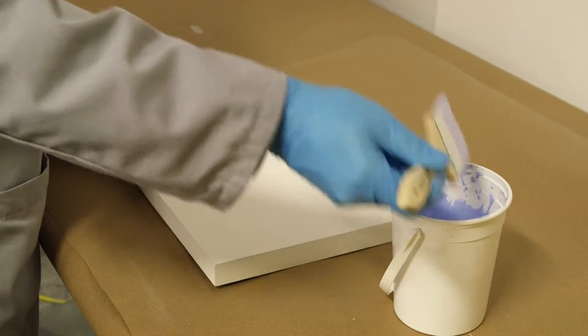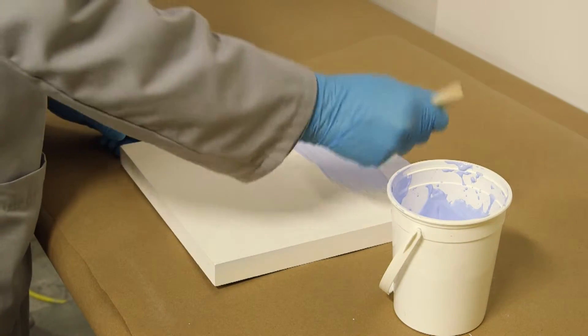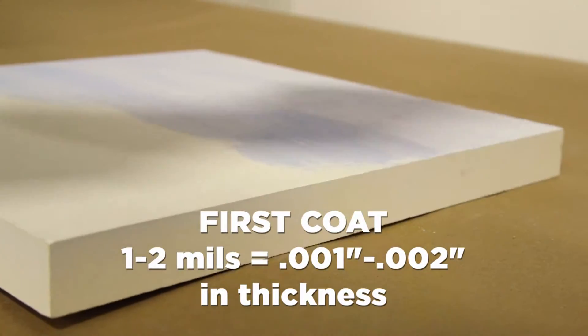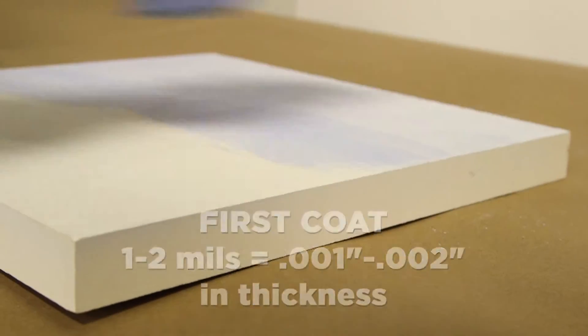First, a single thin layer is applied uniformly over the ceramic plate with the bristle brush, yielding about one to two mils or one to two thousandths of an inch in thickness for the first coat after drying.